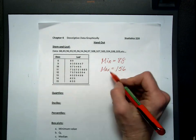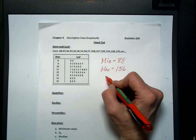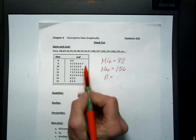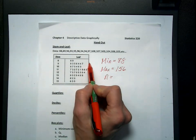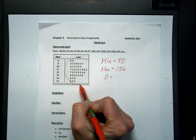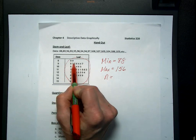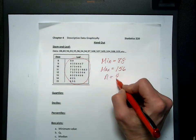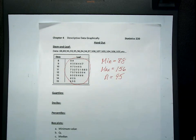I can also, from a stem and leaf plot, just like a histogram, give you total sample size. How would I do that? To calculate sample size, I would just count the number of data points in the leaf section. In this case, there are 45 data points.